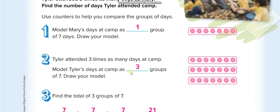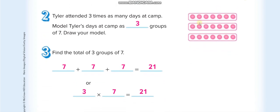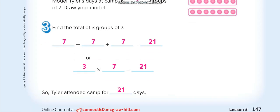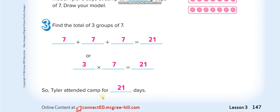Three groups of seven for Taylor and one group of seven for Mary: seven plus seven plus seven equals 21. Or three times seven equals 21. So Taylor attended for twenty-one days.